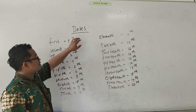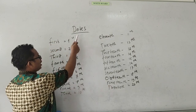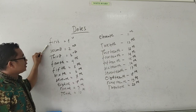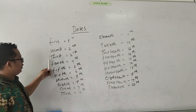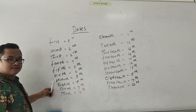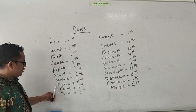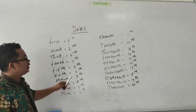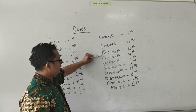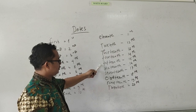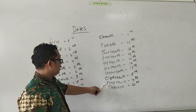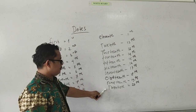Now let's come to the next lesson, that's Dates. Dates artinya adalah tanggal. Okay. First, second, third, fourth, fifth, sixth, seventh, eighth, ninth, tenth, eleventh, twelfth, thirteenth, fourteenth, fifteenth, sixteenth, seventeenth, eighteenth, nineteenth, twentieth.